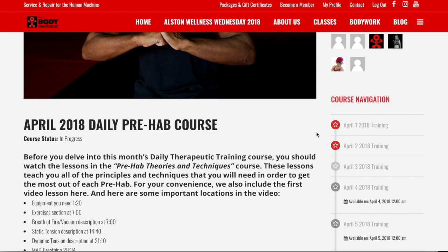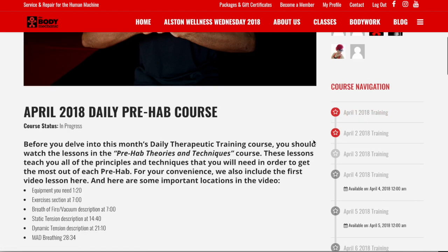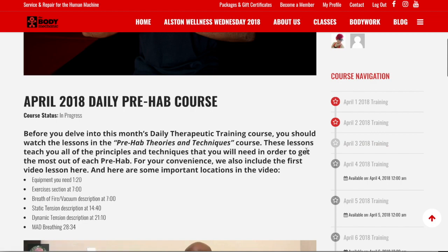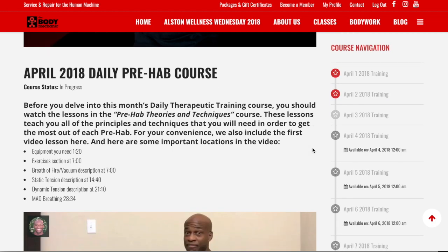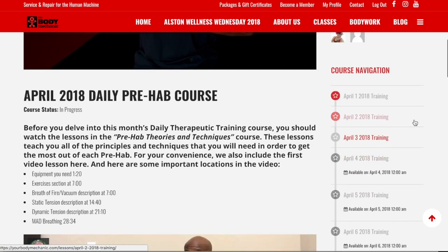Today is April 3rd. If I had not completed April 1st there would not be a red star there, and if I'd only done April 2nd that would be my only red star. But I've done both. Now that we are at April 3rd I can select April 3rd, but I cannot select April 4th or beyond because those aren't available yet.